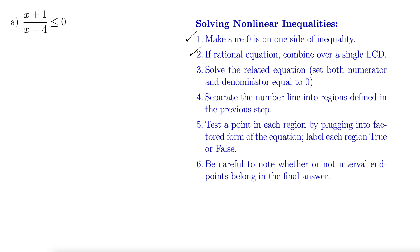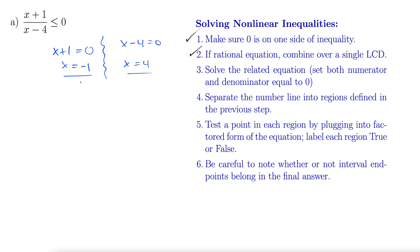Step three — solve the related equation. We set both the numerator and the denominator equal to zero. That accounts for both where the function crosses the x-axis and where it has an asymptote. So we take x plus one equals zero, giving us x equals negative one — that's our x-intercept. We also have x minus four equals zero, giving us x equals four — that's our asymptote.